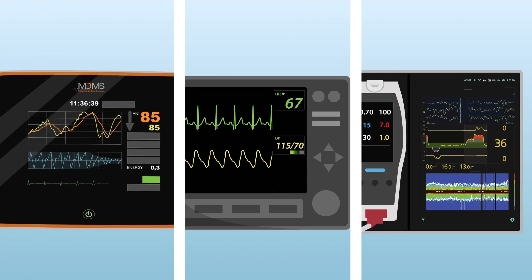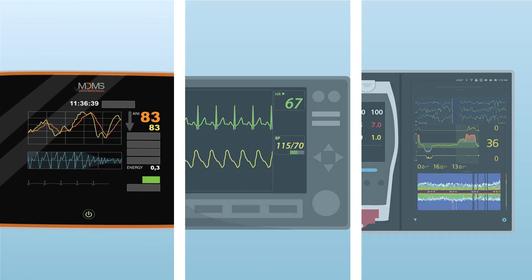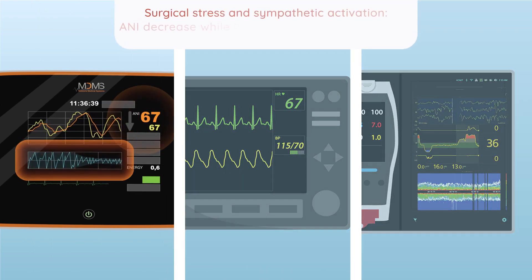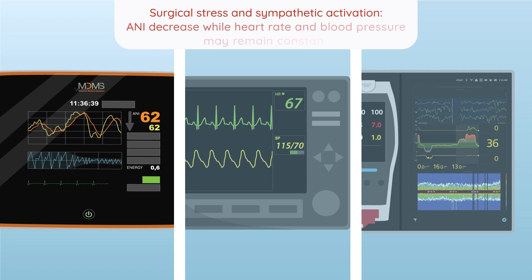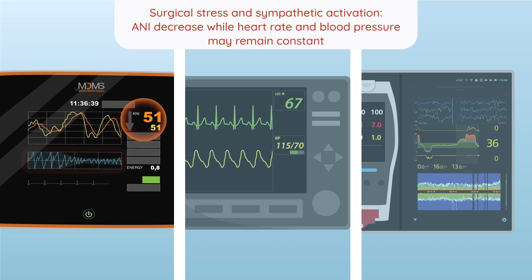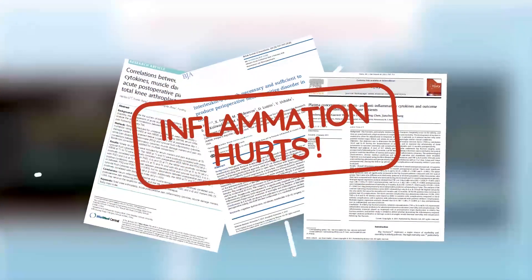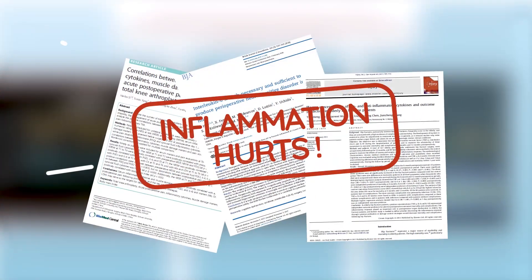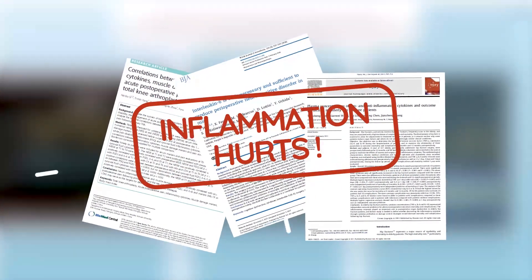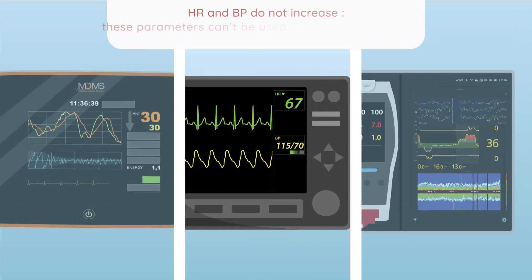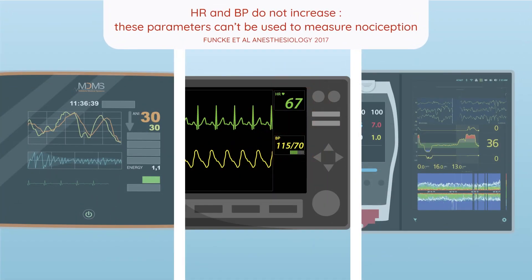ANI is shown as the percentage of a patient's parasympathetic activity in the previous one or two minutes. A decrease means sympathetic activity and an activation of inflammation. Research has shown that inflammation is the cause of pain and poor outcomes. Hemodynamics do not always react to nociception, but ANI does.